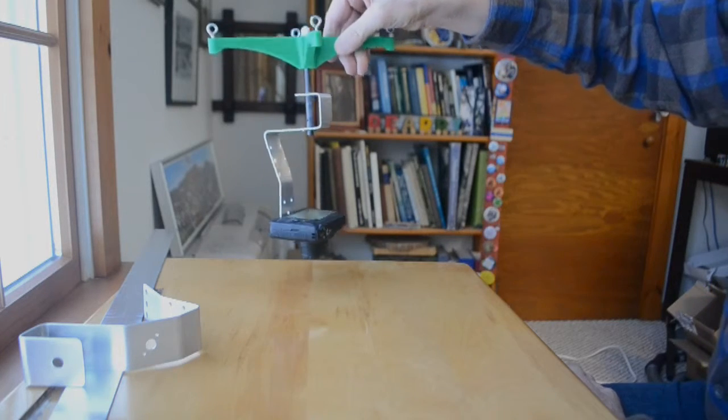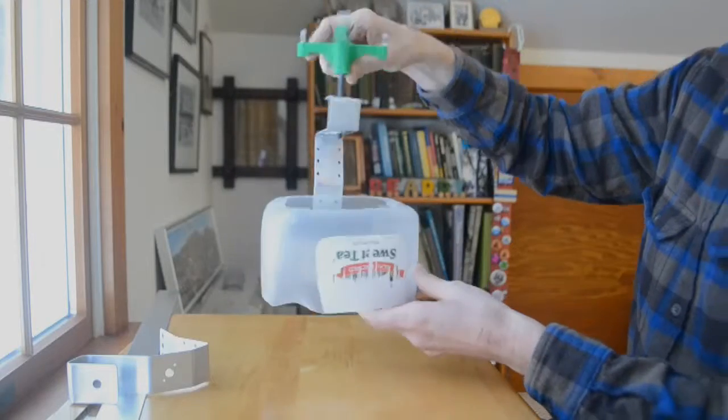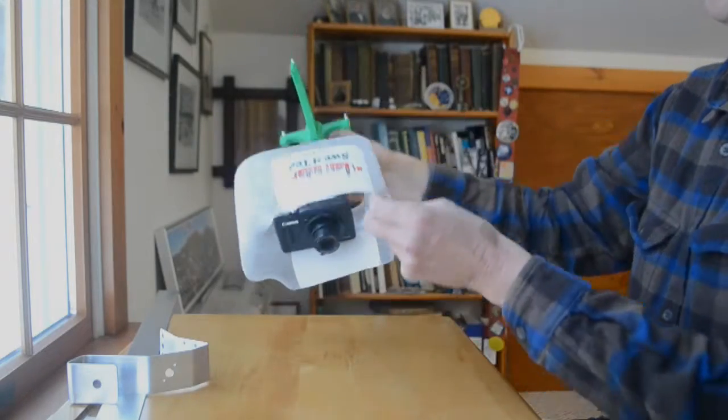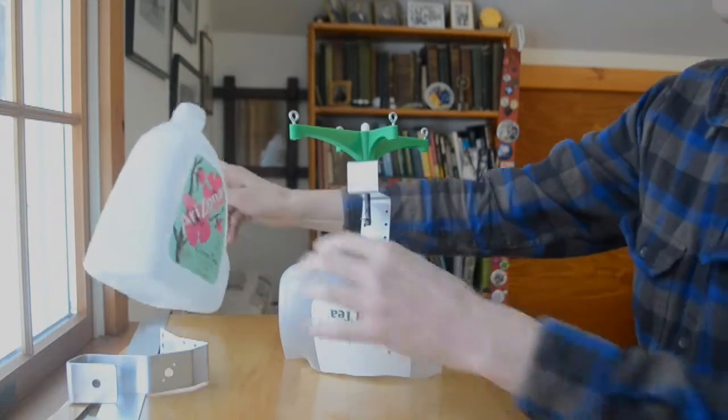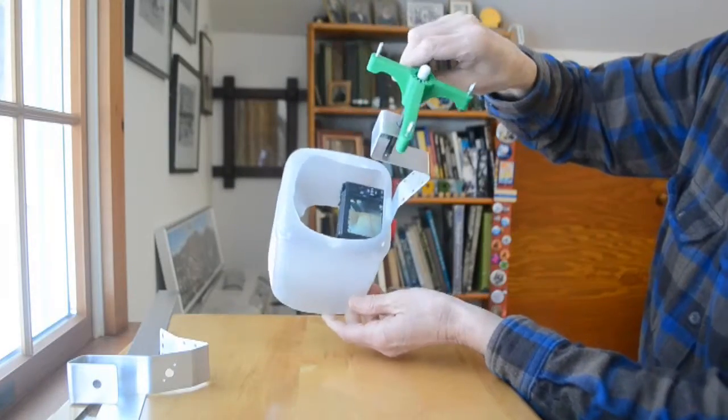There are a couple of ways to add protection for the camera. This is a 1-gallon iced tea jug, which is very tough plastic, and has this strong, thicker edge around the bottom, which I didn't cut away. This is really excellent protection for the camera.